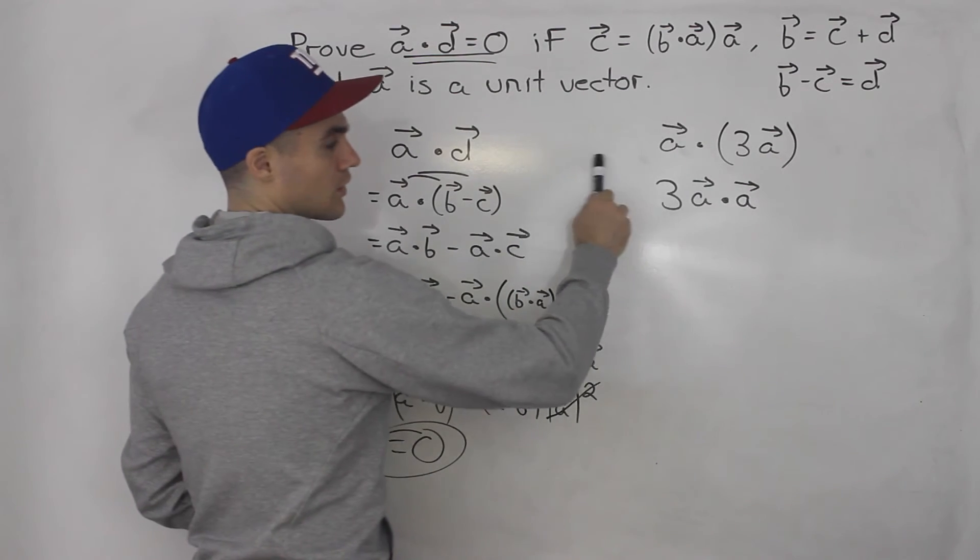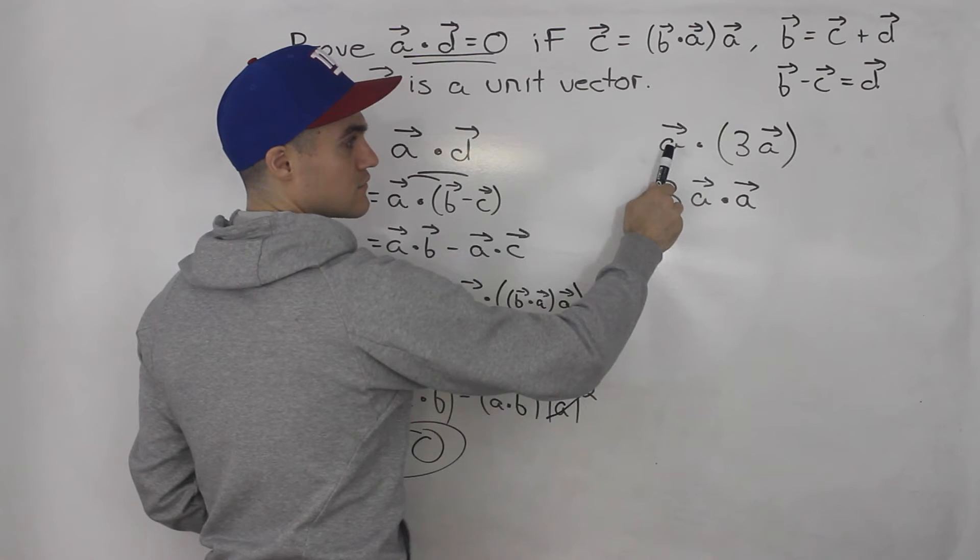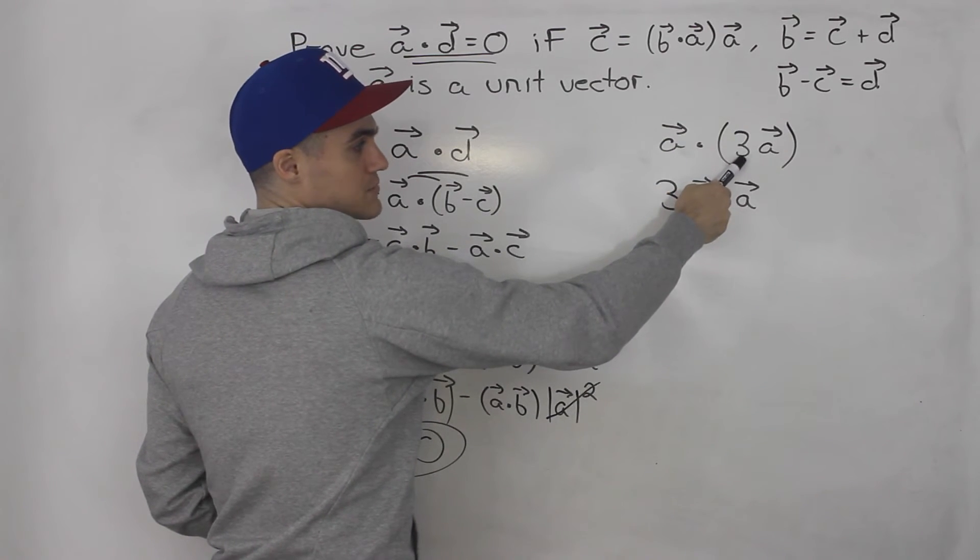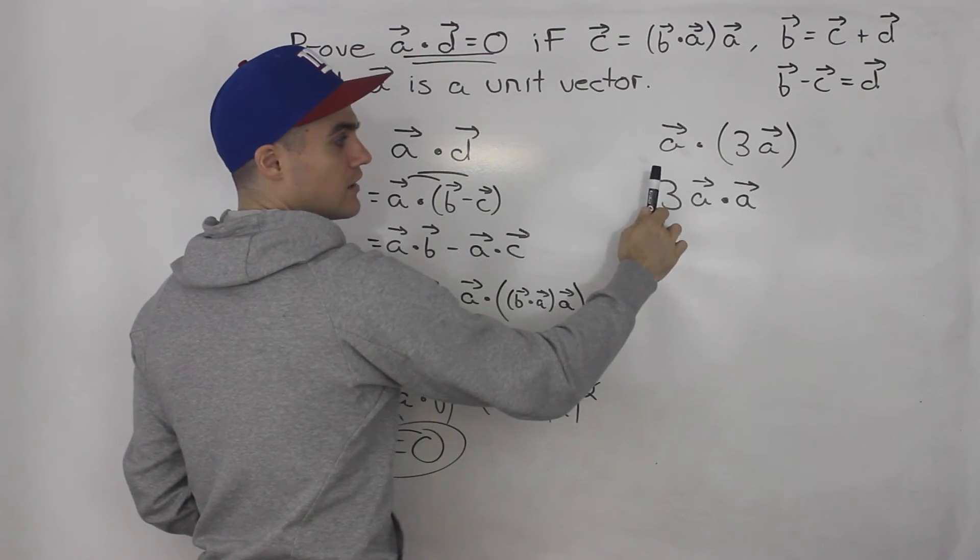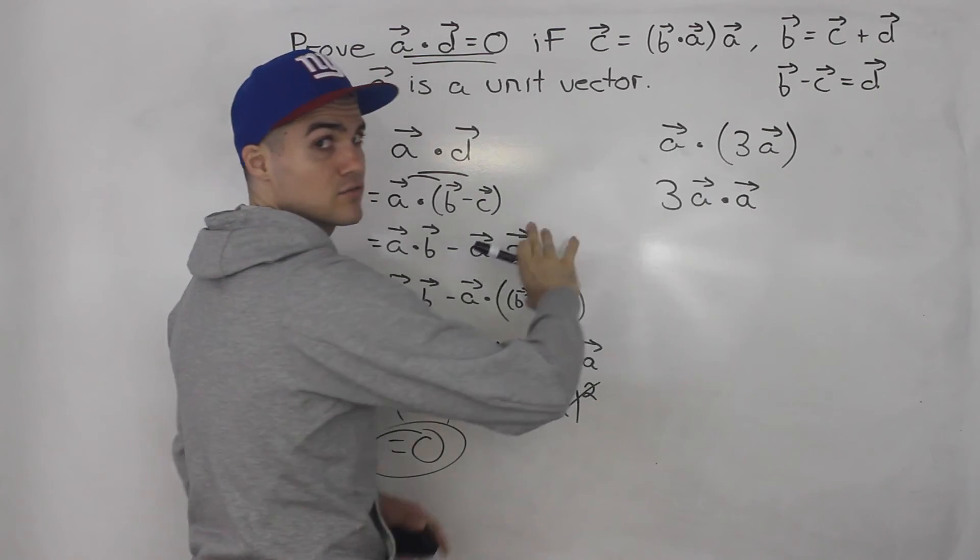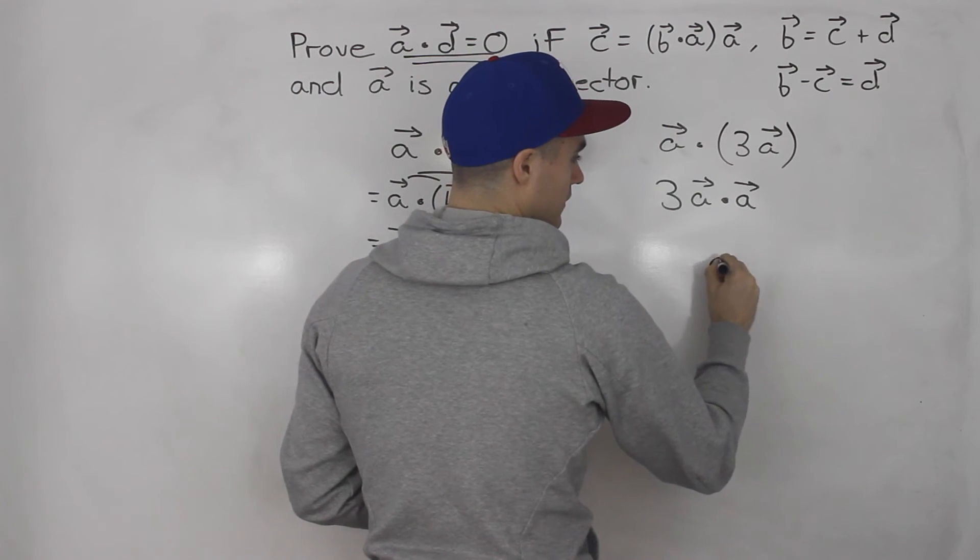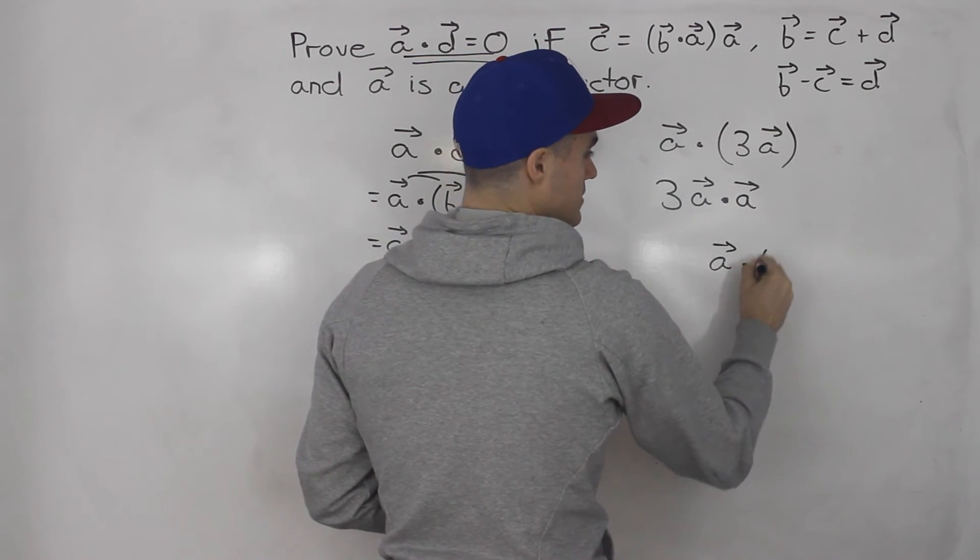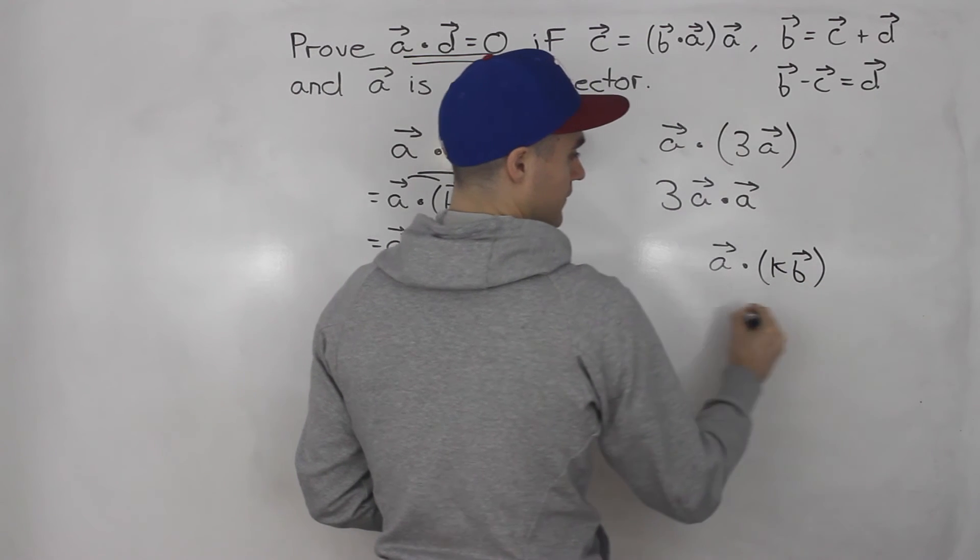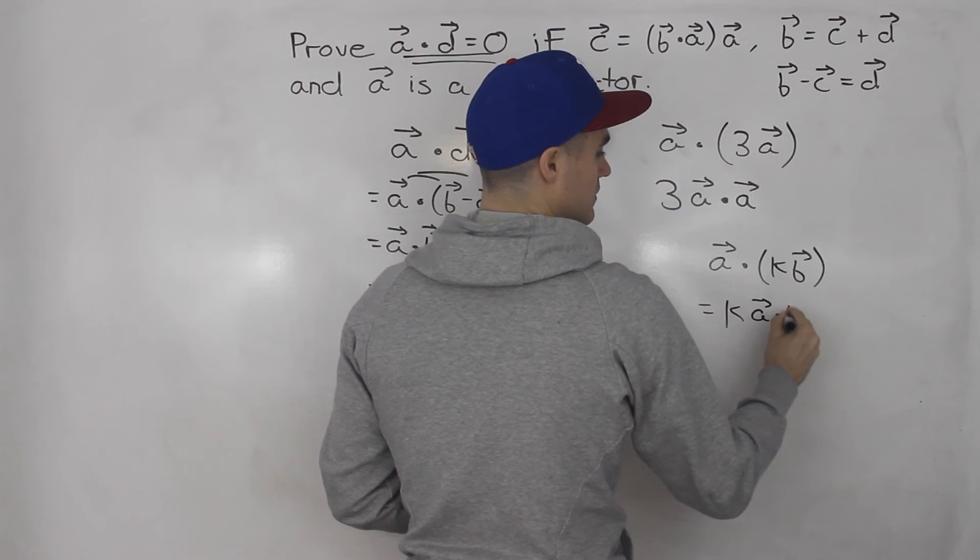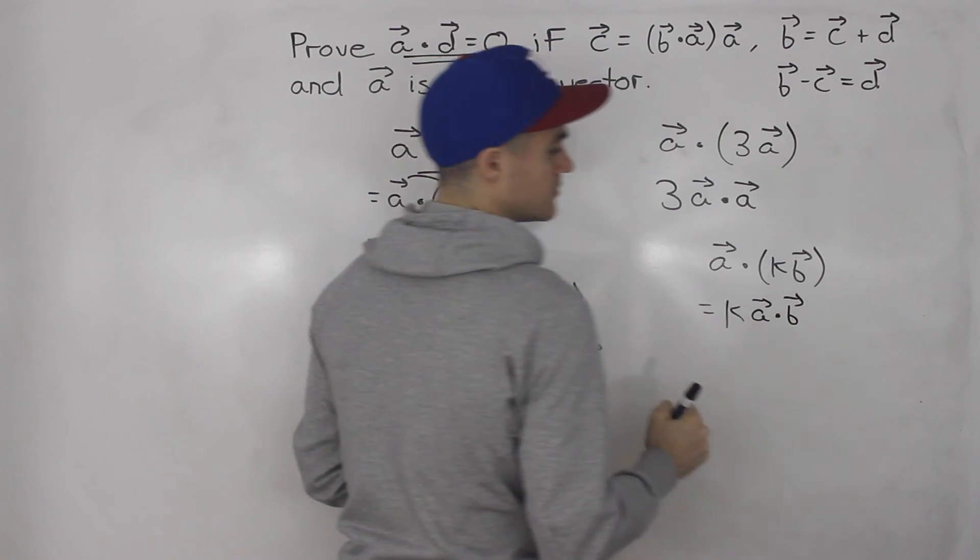So just remember your dot product rules, that if you've got the dot product of a vector with another vector times a scalar, you could bring the scalar in front, and then just take the dot product of those two vectors. I think the rule is like, if you've got a dot k vector b, well, that's the same as k times a dot b.